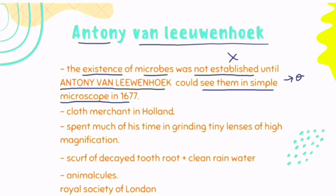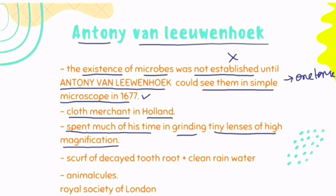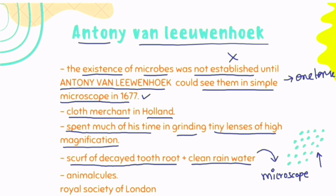In 1677, Leeuwenhoek was a craft merchant in Holland. He spent much of his time grinding tiny lenses of high magnification. What he did was take a scraping of decayed tooth root, mixed it with clean rain water, and observed this mixture under his microscope. He observed tiny moving particles and named them 'animalcules.'